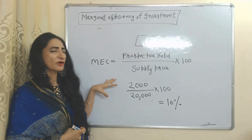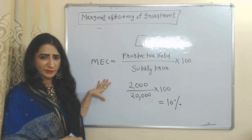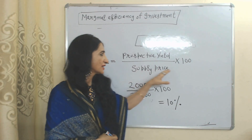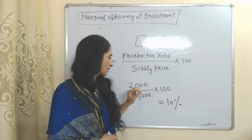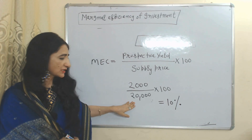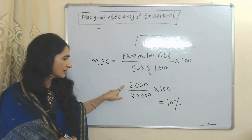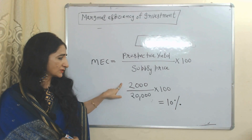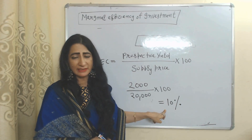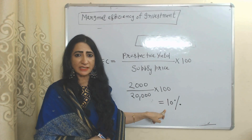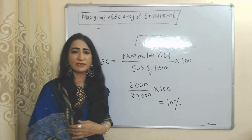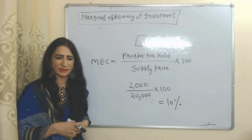Now let's see the formula for calculating marginal efficiency of investment: prospective yield divided by supply price, multiplied by 100. Suppose the supply price or cost is 20,000 and the prospective yield is 2,000. So it becomes 10%. That means your expected return from additional investment is 10%, and this 10% is called the marginal efficiency of investment.